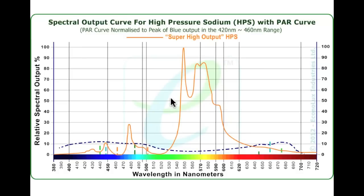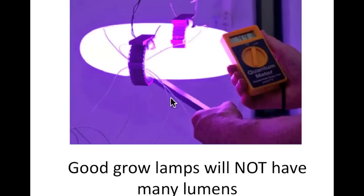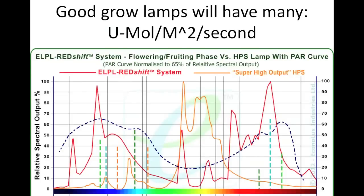Lumens is just the wrong measure for plants. The good news is we now have wonderful meters where we can measure parlite. A good grow lamp will likely not have many lumens in it because lumens just don't matter. What matters is this other measure, typically called micromoles — or micromoles per meter squared per second to be more specific. The better grow lamps will have a lot of parlite in them and not necessarily a lot of lumens. We have to shift how we're thinking and move away from lumens.